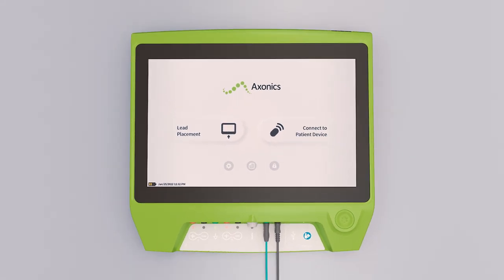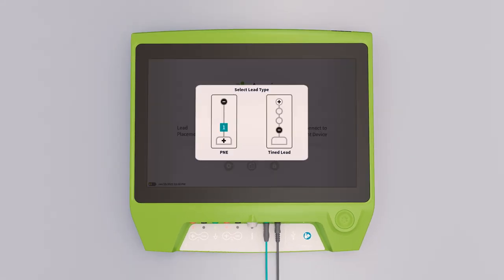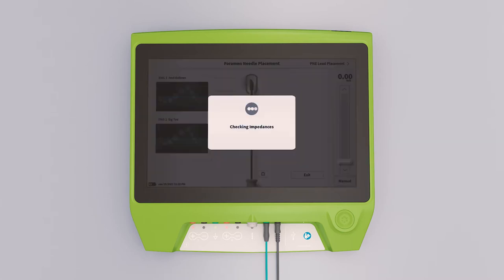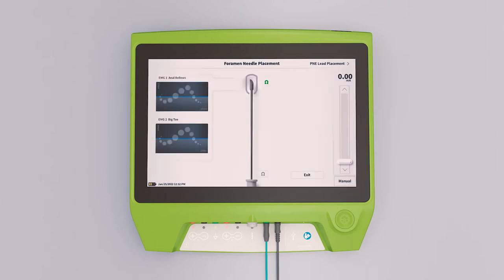The clinician programmer is used to provide stimulation to test for patients' responses. A typical S3 sensory response is a tapping, tingling, or vibration in the genital, perineal, or rectal area. If tolerated by the patient, amplitude can be increased until a motor response is observed.